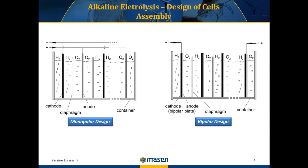However, there are also some disadvantages with bipolar cells. The compactness and high pressures of the bipolar electrolyzers require sophisticated and complex system designs, and consequently this increases the manufacturing costs. The monopolar electrolyzer systems are, in comparison, less costly to manufacture. Nevertheless, most commercial alkaline electrolyzers manufactured today are bipolar.